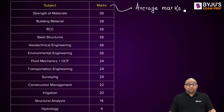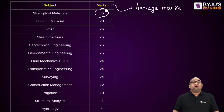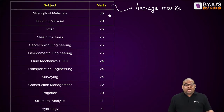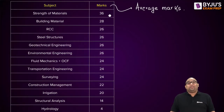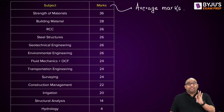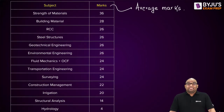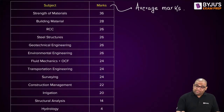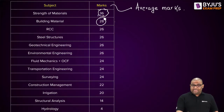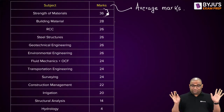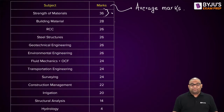You can see that Strength of Materials is around 36 marks and Building Material is around 28 marks. In GATE, Building Material is hardly 1 or 2 marks — very less. But you can see that Building Material becomes a very important subject as far as ESC prelims is concerned. Combined, Strength of Materials and Building Material make around 60-something marks.